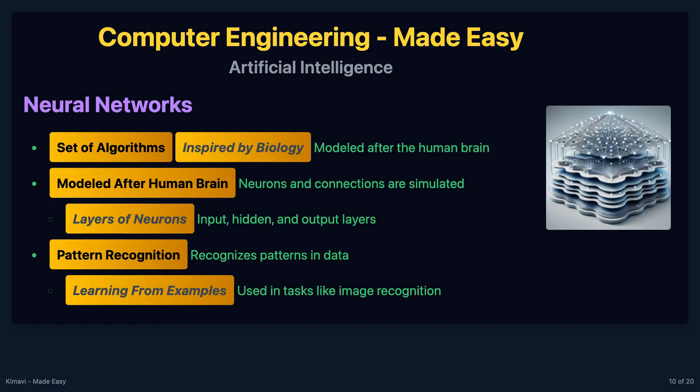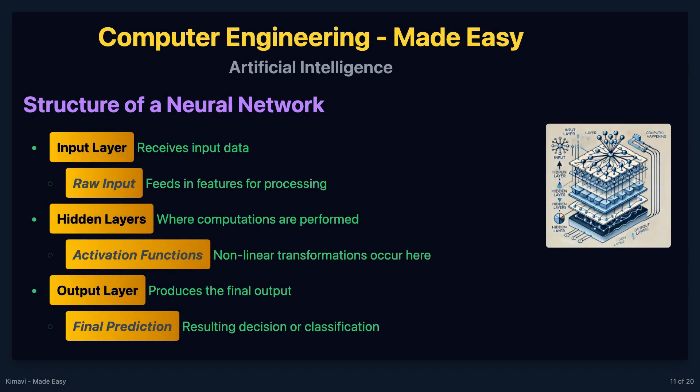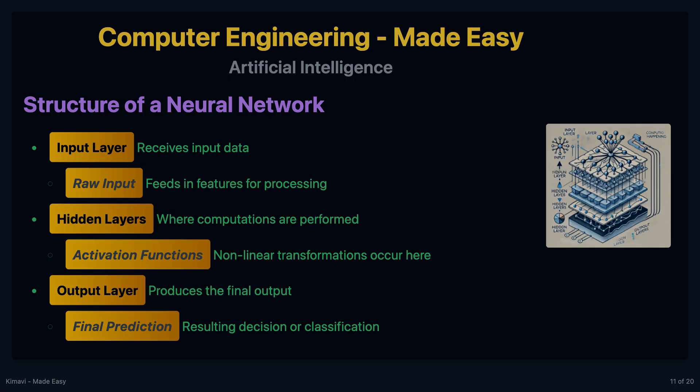Neural networks are a set of algorithms modeled loosely after the human brain, designed to recognize patterns. They interpret sensory data through a kind of machine perception, labeling or clustering of raw input. A neural network consists of layers of neurons: the input layer, which receives the input data; hidden layers, where computations are performed; and the output layer, which produces the final output. Each neuron in a layer is connected to every neuron in the next layer, and each connection has a weight associated with it.